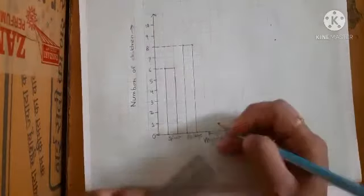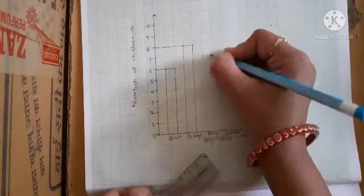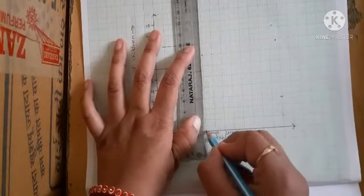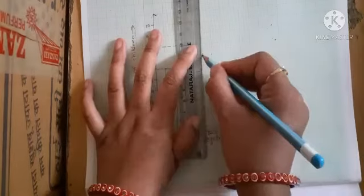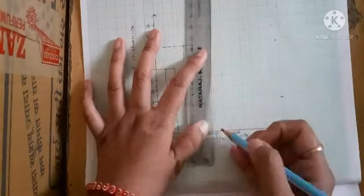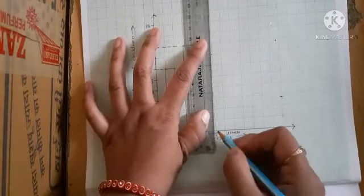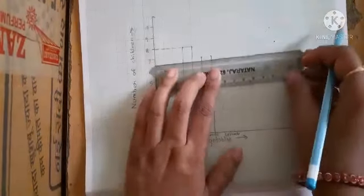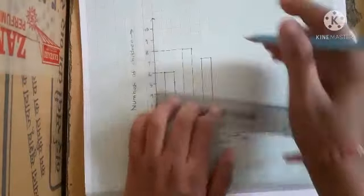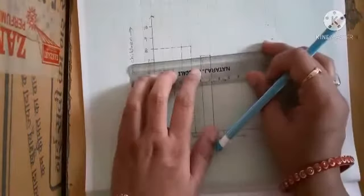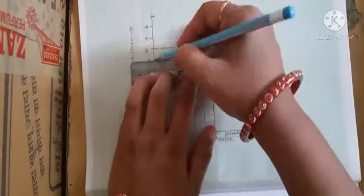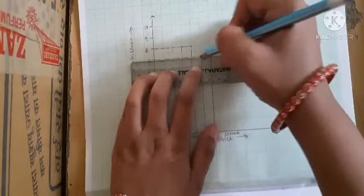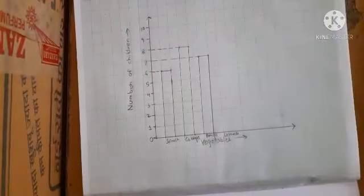Next is broccoli and the number is 7. Next we will add the bar here also, then we will be joining these two points. And then the dotted line will be drawn here. So we have drawn broccoli also.